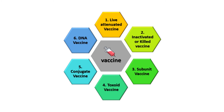After considering all these points, scientists decide what type of vaccine should be made. There are various types: first, live attenuated vaccine; second, inactivated or killed vaccine; third, subunit vaccine; fourth, toxoid vaccine; fifth, conjugate vaccine; and sixth, DNA vaccine. Let's discuss them one by one.